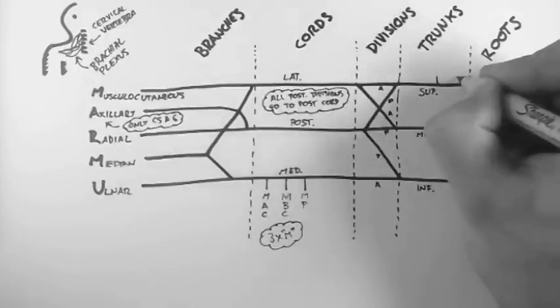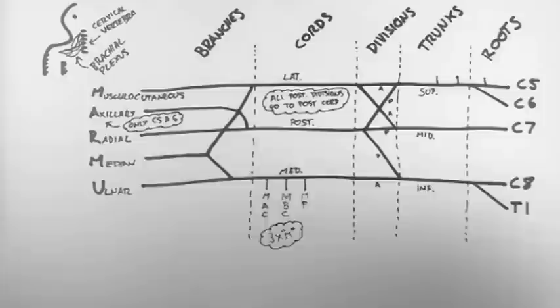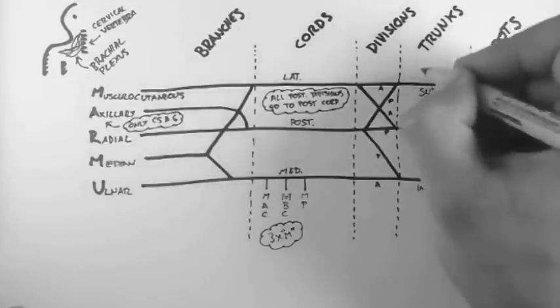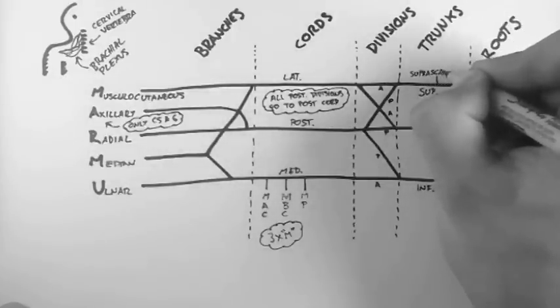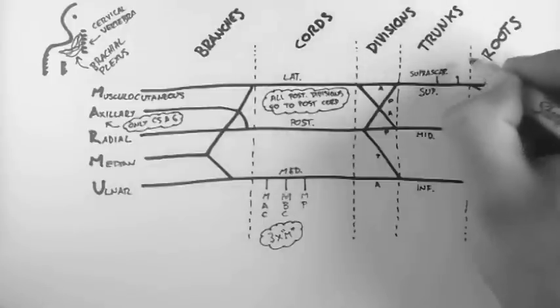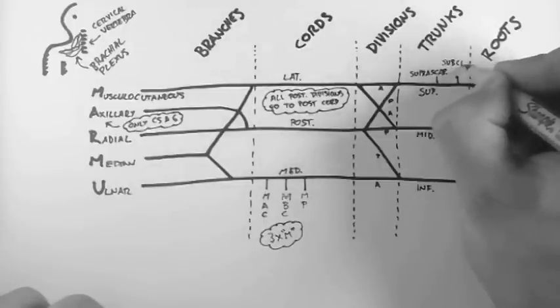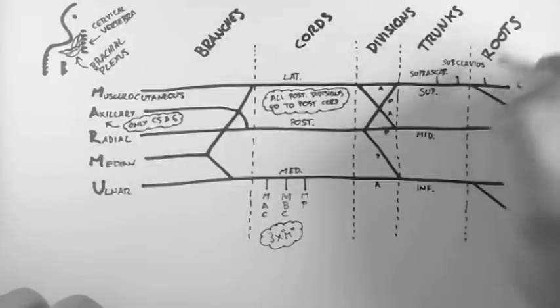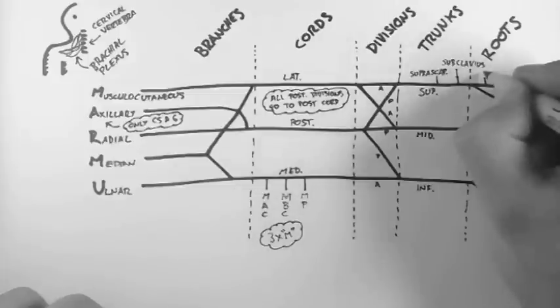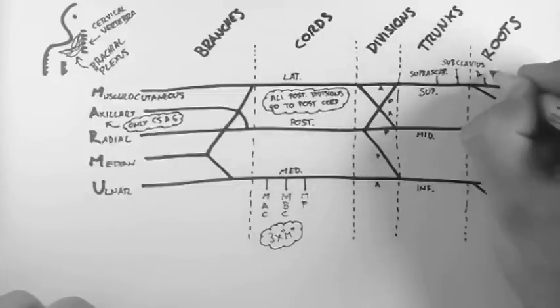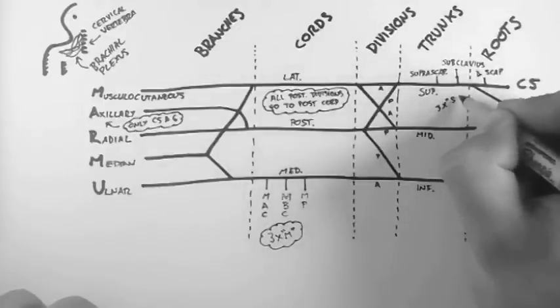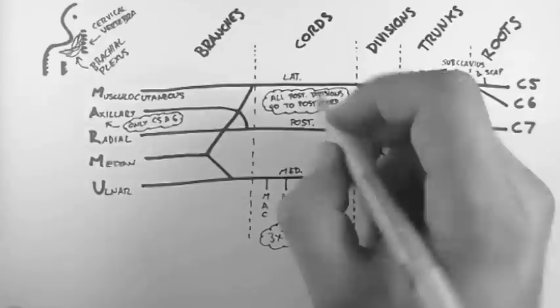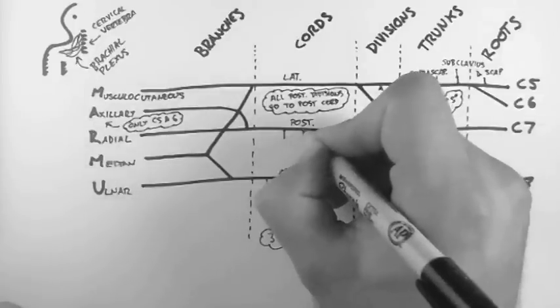Now up here, there are another three nerves. And the first is the suprascapular. The next is subclavius. And the third is the dorsal scapula. So I think of these as the three S's, where the dorsal scapula is another S, S for scapula.